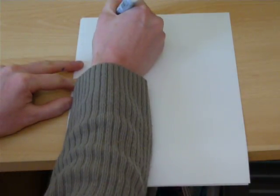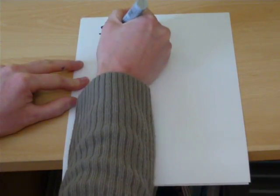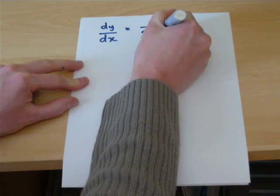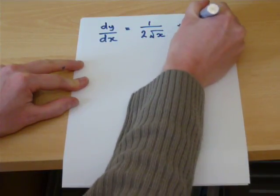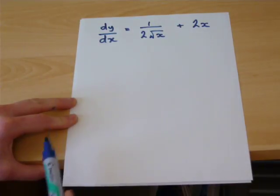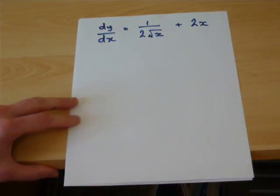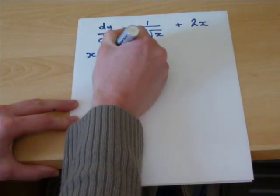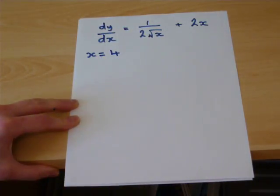We can rewrite the gradient as x to the power of minus a half means 1 over the square root of x. And therefore, when x equals 4, we get the gradient...